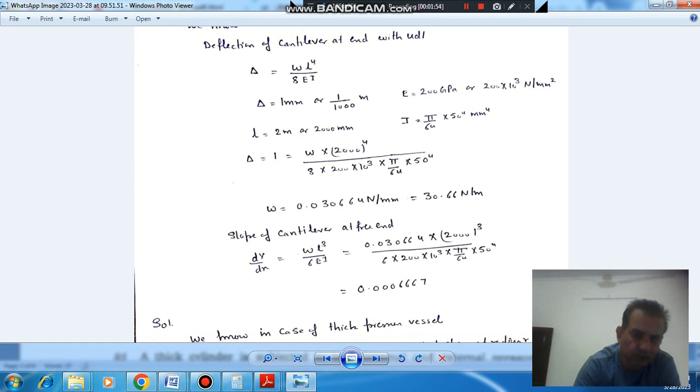And slope also can be given at free end, which for UDL is given by WL cube by 6EI. So again, taking this in Newton per mm and taking all the lengths in mm.